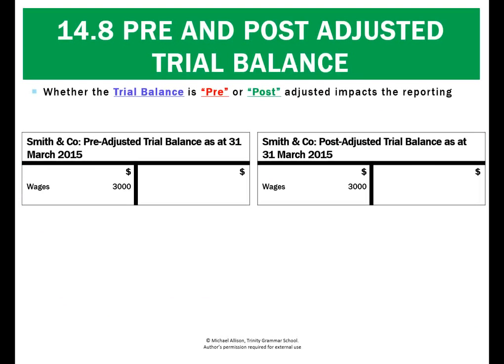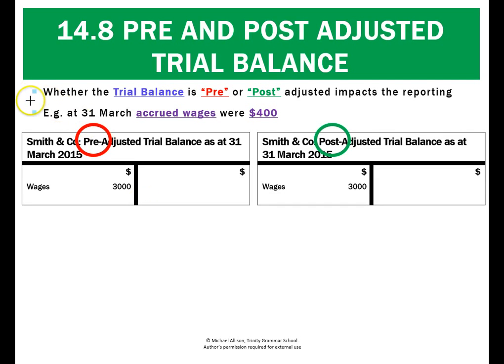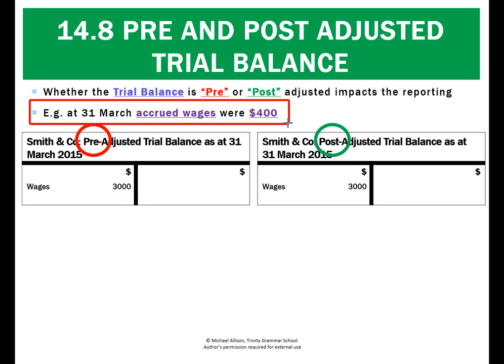Assuming we have the same two trial balances with the same figure for wages of $3,000 each, the trial balance on the left is pre-adjusted and the one on the right is post-adjusted. There's an amount we need to record of accrued wages of $400. In the pre-adjusted trial balance on the left, that hasn't been recorded yet. But in the post-adjusted trial balance on the right, that $400 has already been recorded.